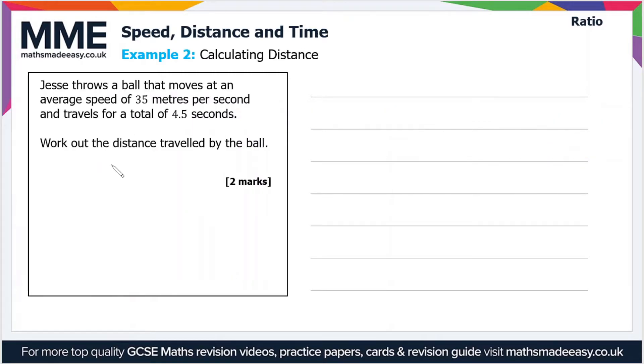Moving on to have a look at another example then, this time we're calculating the distance. So Jesse throws a ball that moves at an average speed of 35 meters per second and travels for a total of 4.5 seconds. Work out the distance traveled by the ball.